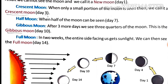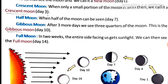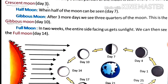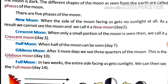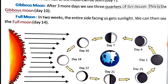Next is the full moon on day fourteen: in two weeks the entire side facing us gets sunlight and we can see the full moon. So the phases are: new moon on day one, crescent moon on day four, half moon on day seven, gibbous moon on day ten, and full moon on day fourteen — with three-day gaps between each phase.